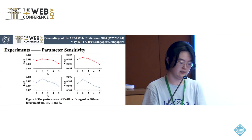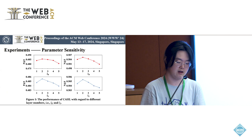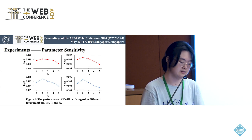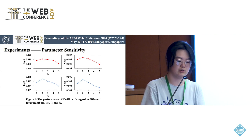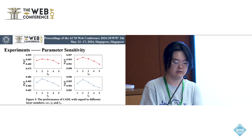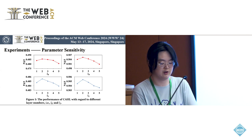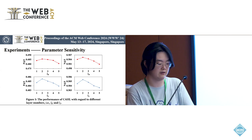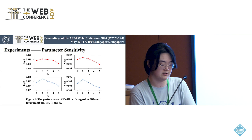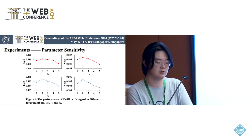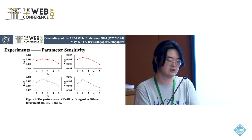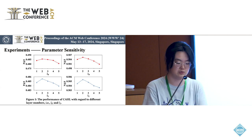In the JKE and EE modules, we design the LR and LS layer aggregation respectively. Therefore, we study the impact of LR and LS on the model performance, selecting the range of 1 to 5. Figure 5 shows the P@5 and N@5 scores. The results indicate that CAHL performs at its best when the number of layers in both aggregation operations is set to 2.